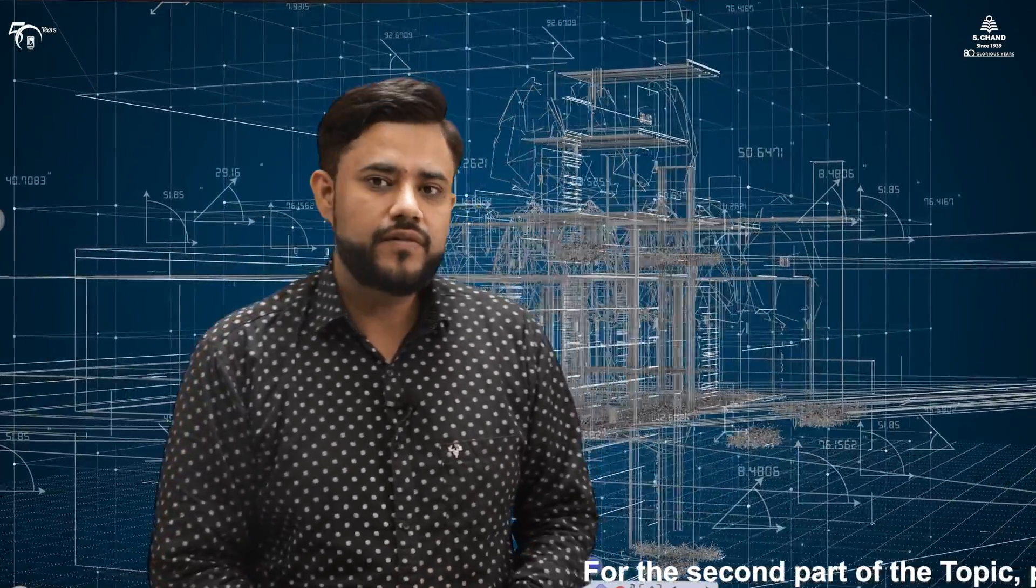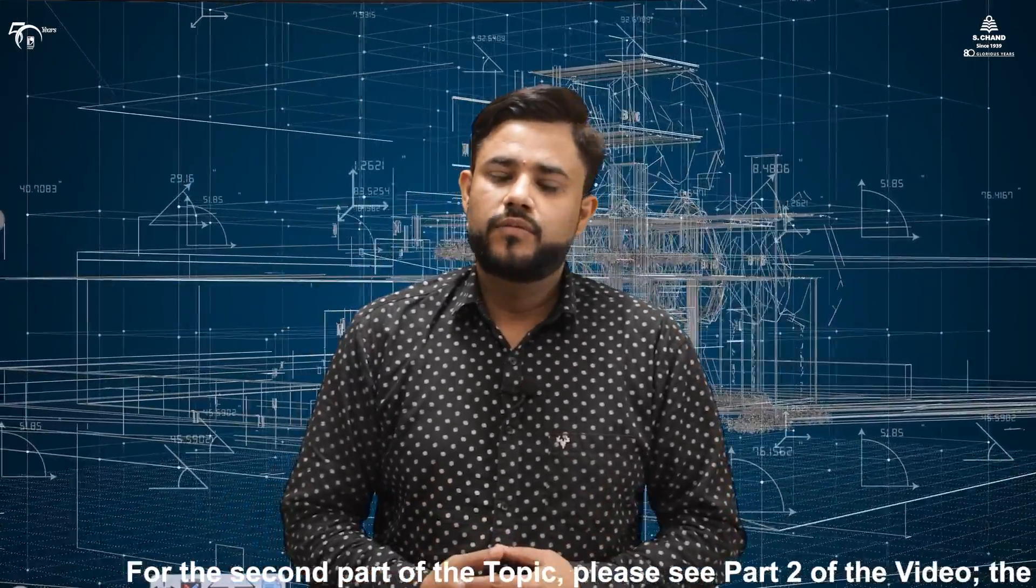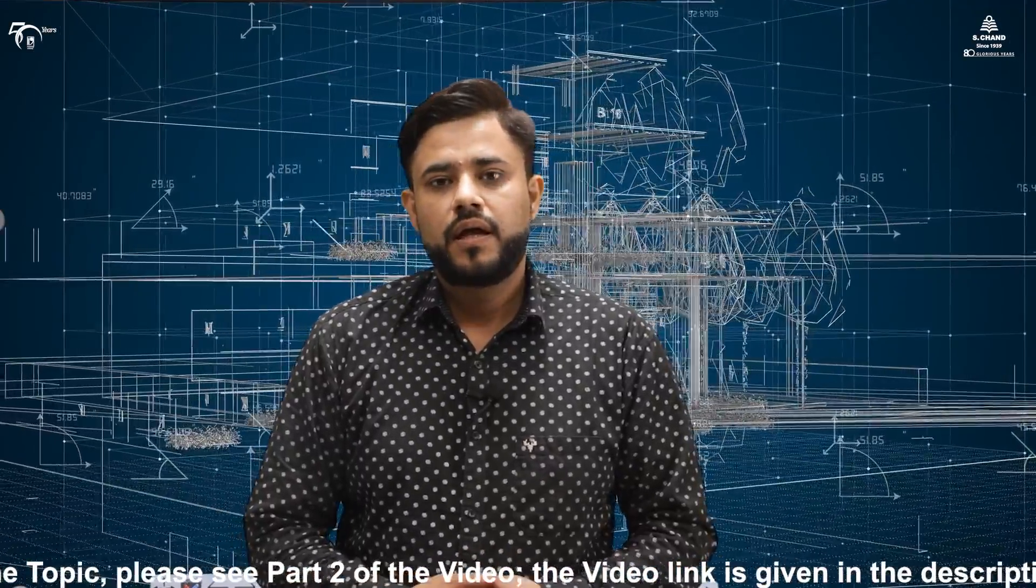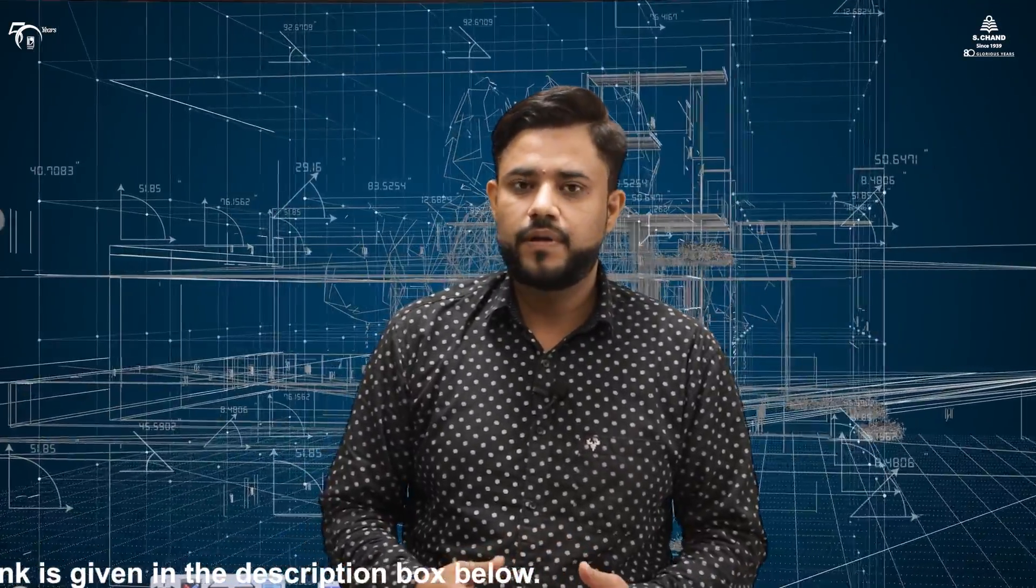With this we come to the end of the first part of the video in which we learned the concept of how to convert orthographic view into the isometric view. Specifically we have taken an example from the book. In the second part we would consider another example that students find difficult and we will be learning that example in the next part of the same lecture.